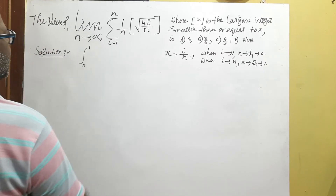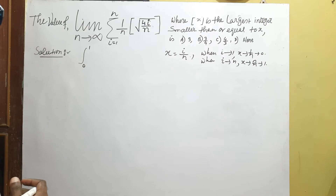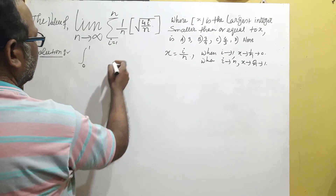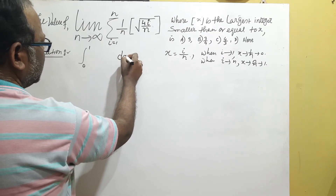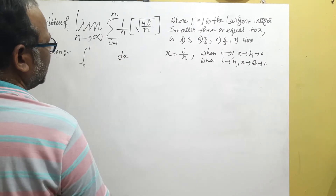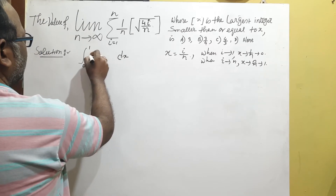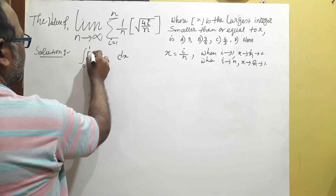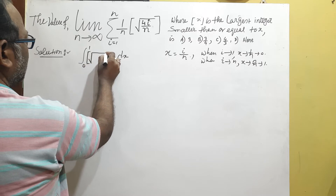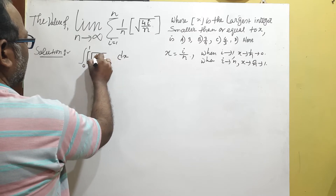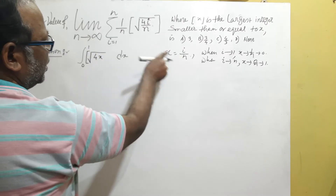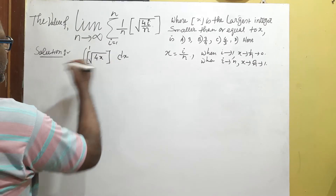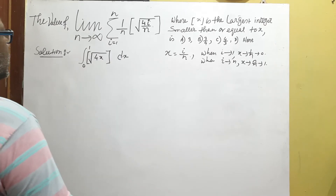For the summation, this becomes the integral. The (1/n) term gives dx in the Riemann sum representation, and we write the integral as the integral from 0 to 1 of floor(√(4x)) dx.